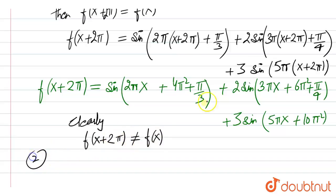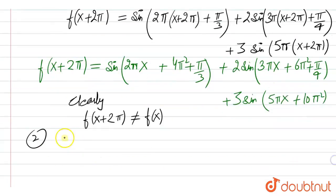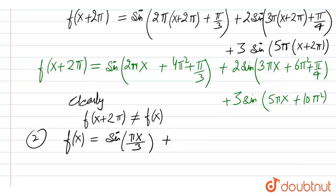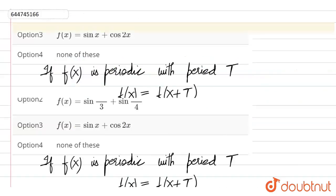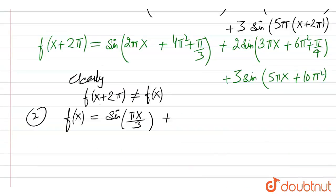Now we check option number 2. In option number 2, we have f(x) equal to sin(πx/3) plus sin(πx/4).